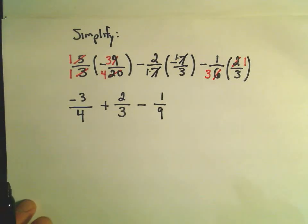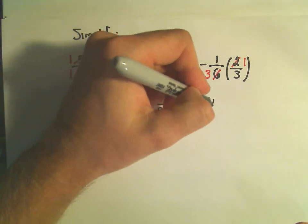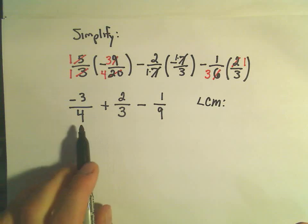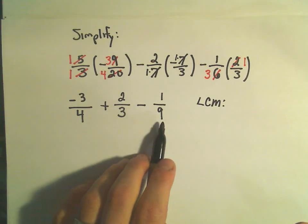And at this point what we have to do to combine these, now we do have to get common denominators. So I'm thinking of the least common multiple of the denominators 4, 3, and 9. And typically to find that, I take the biggest number in the denominator, which is 9, and I just start thinking about multiples of it.